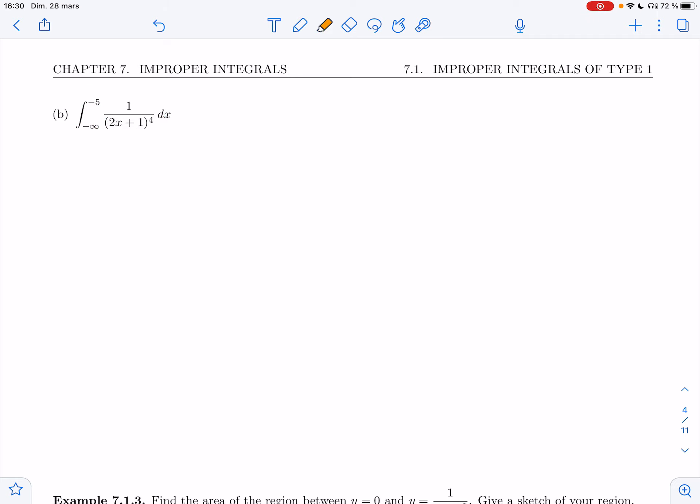So as soon as I see that minus infinity, I know I have an improper integral of type 1. Type 1 means one of the bounds is infinite, if not both. And so I know I'm going to have to rewrite.